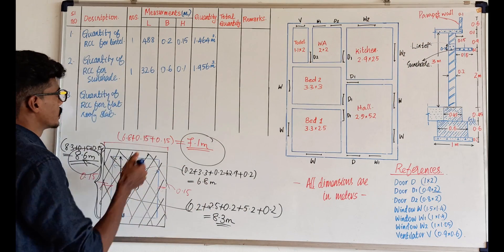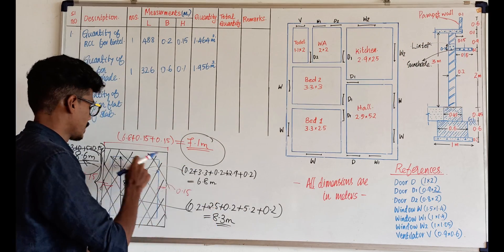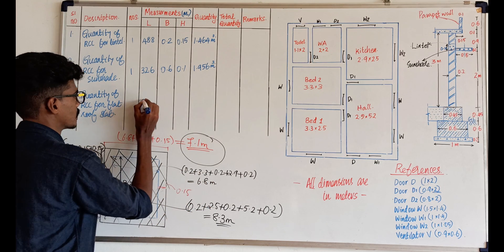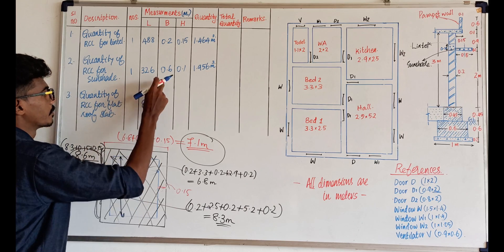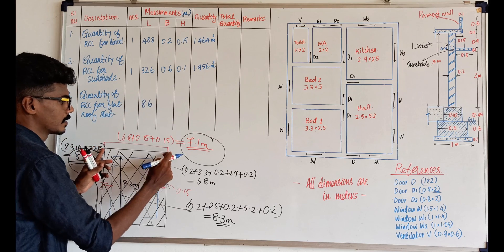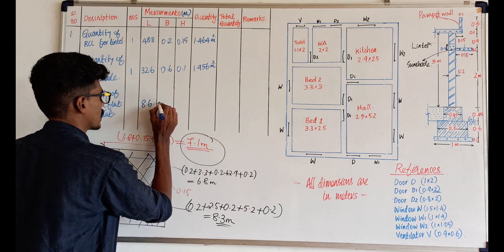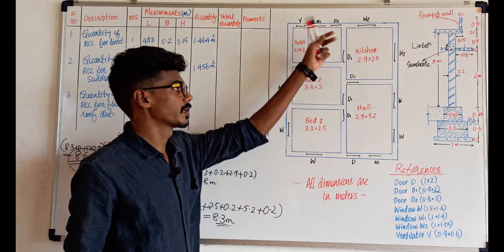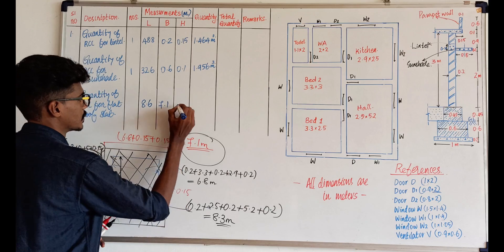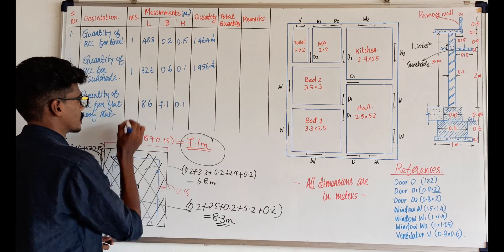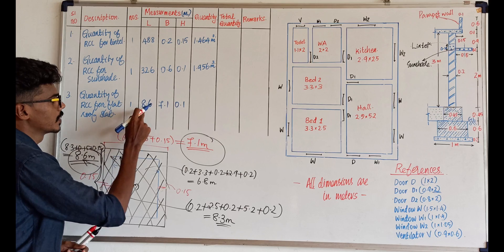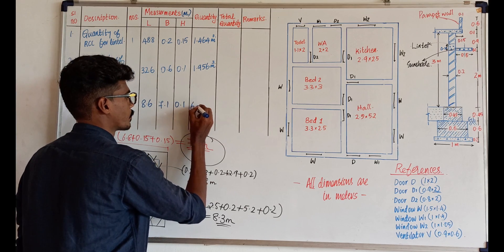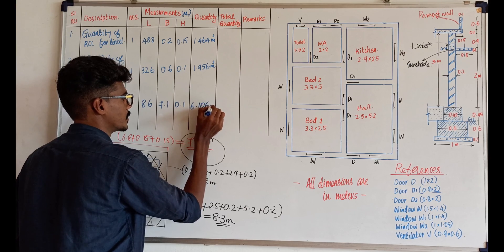The thickness is not 1.1 meters — this is the slab thickness. So, what is the length of the slab? It is 8.6 meters. What is the breadth of the slab? It is 7.1 meters. The height (thickness) of the slab is 0.1 meters. We multiply these three values to get the quantity of the slab, which is equal to 6.106 cubic meters.